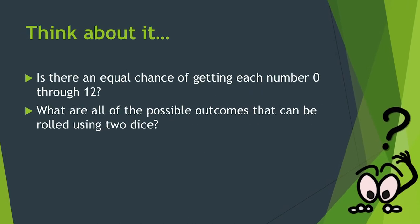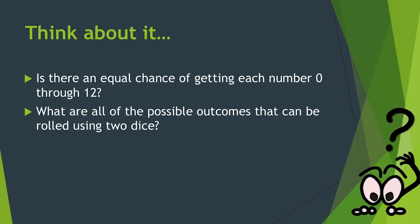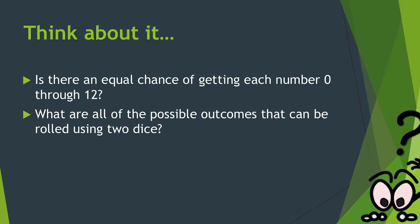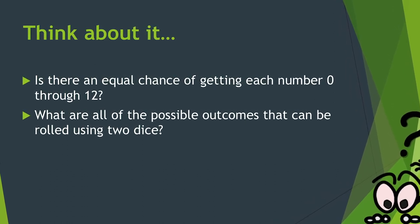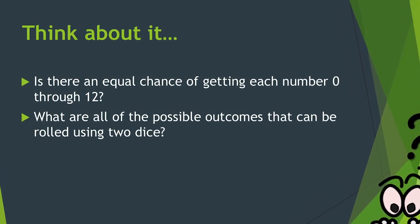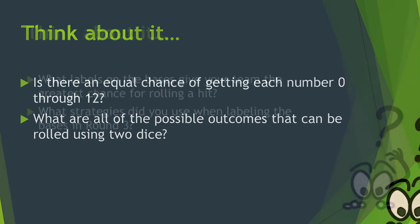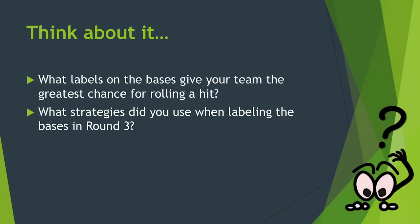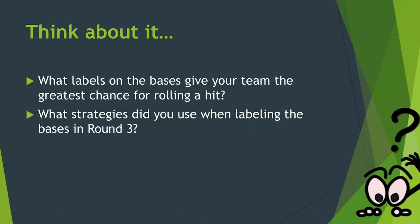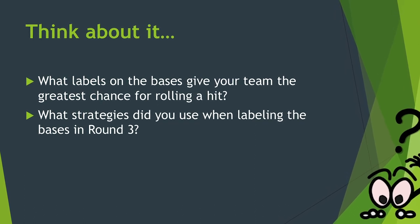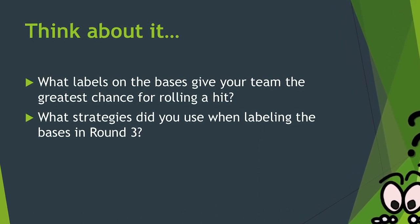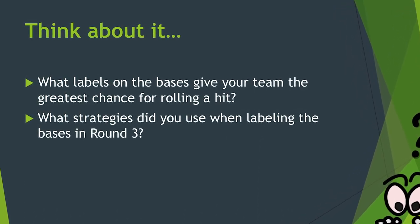Here are some questions to think about while playing or after play: Is there an equal chance of getting each number 0 through 12? What are all the possible outcomes that can be rolled using two dice? What labels on the bases give your team the greatest chance for rolling a hit? What strategies did you use when labeling the bases in round three?